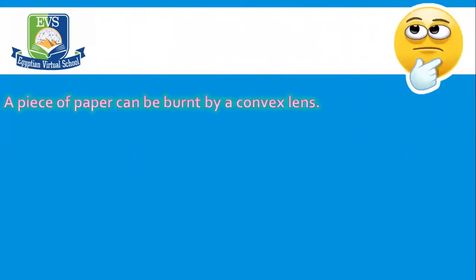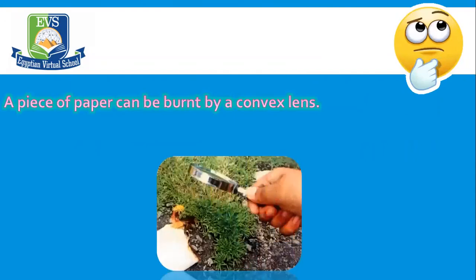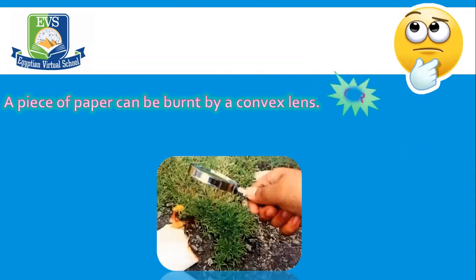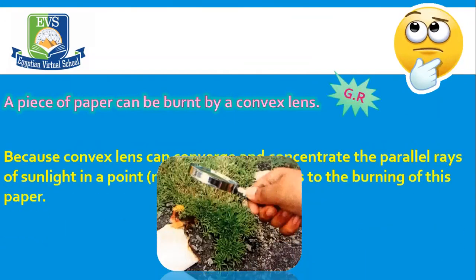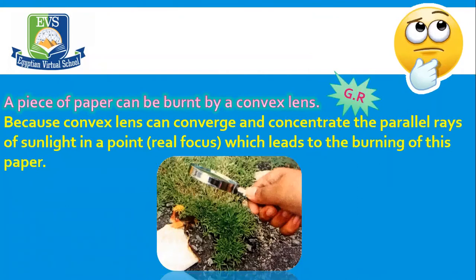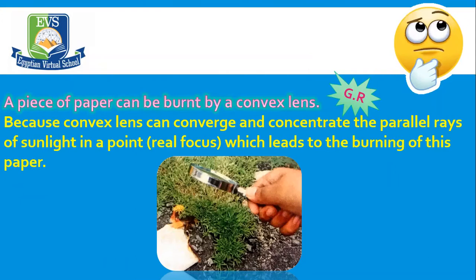A piece of paper can be burned by using a convex lens. Give reason: because a convex lens can converge and concentrate the parallel rays of sunlight at a point called the real focus, which leads to the burning of the paper.